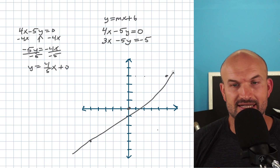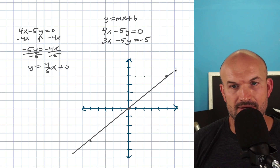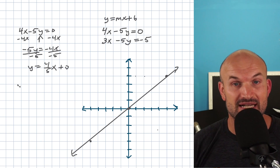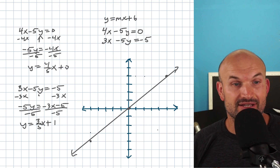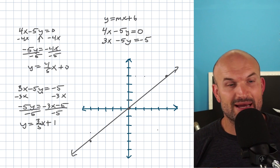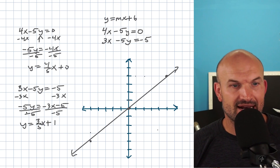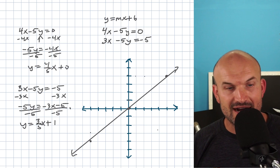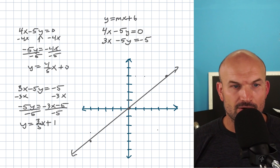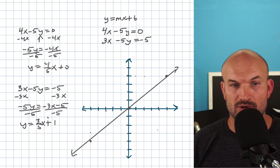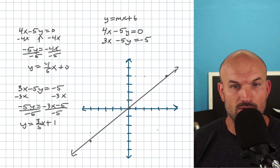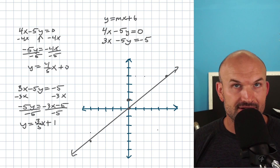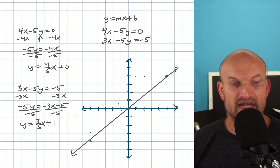Now I'll go ahead and connect these two points. We need to apply this process for the second equation — rewrite it and solve for y. I subtracted the 3x and divided by negative 5, and that gives me an equation of y equals 3/5 x plus 1. In this case, we have a y-intercept of 1, so I'm going to plot a point there and then follow the slope.